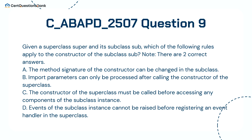Given a superclass Super and its subclass Sub, which of the following rules apply to the constructor of the subclass Sub? Note, there are two correct answers. A. The method signature of the constructor can be changed in the subclass. B. Import parameters can only be processed after calling the constructor of the superclass. C. The constructor of the superclass must be called before accessing any components of the subclass instance. D. Events of the subclass instance cannot be raised before registering an event handler in the superclass.